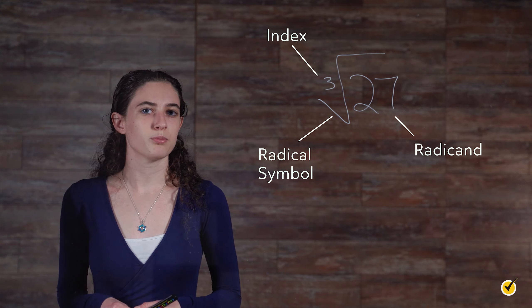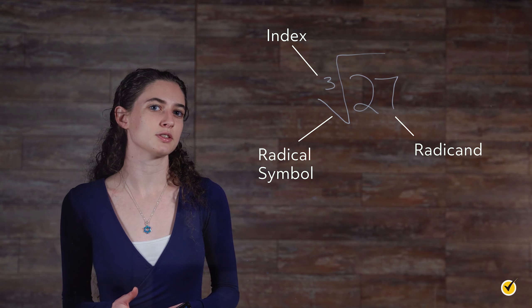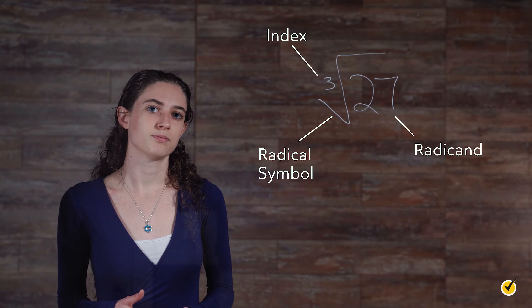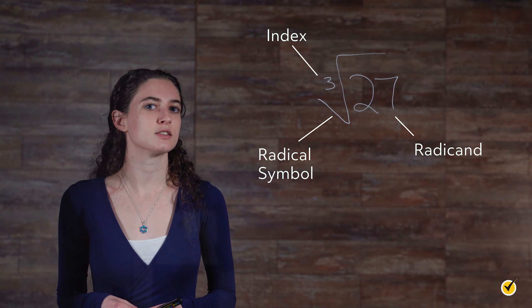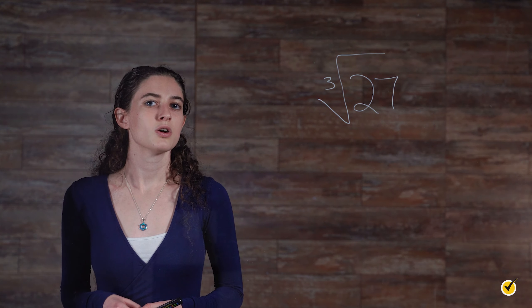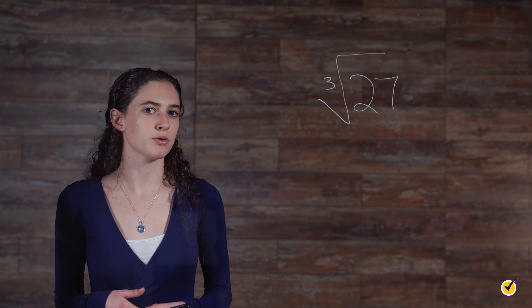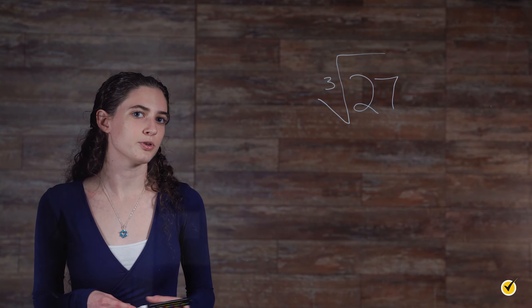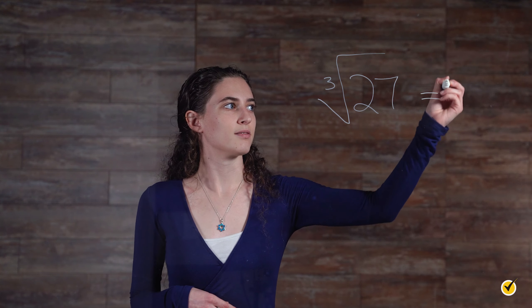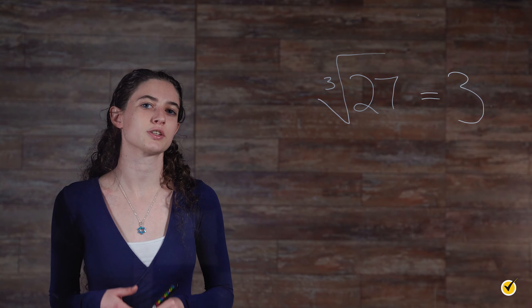The index is the most important feature. That small number placed in the check mark of the radical symbol indicates the root. In this example, because the index is 3, they are asking for the cube root of 27. With a bit of thought, we can determine that 3 times 3 times 3 equals 27. So the cube root of 27 is 3, which means that 27 is a perfect cube.